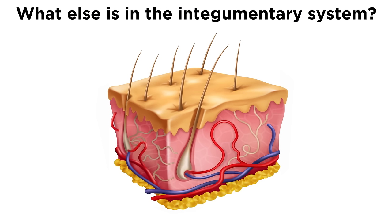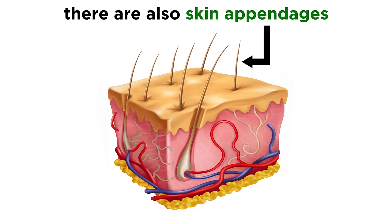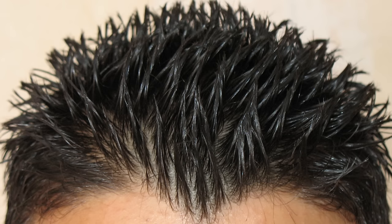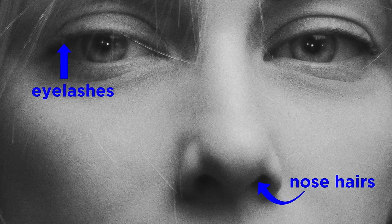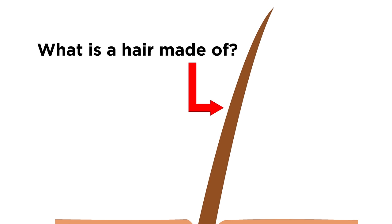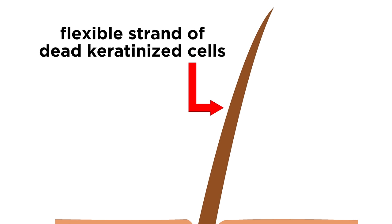That wraps things up for the skin, so let's briefly touch on the other components of the integumentary system, which are called skin appendages. First there is hair. Most of us have lots of hair on our heads, but there is also hair all over the body, including eyelashes and nose hairs, and these all have specific protective functions. A hair is a flexible strand made largely of dead keratinized cells. This is hard keratin, which is a bit different from the soft keratin found in cells of the epidermis, which makes them more durable and not as flaky.